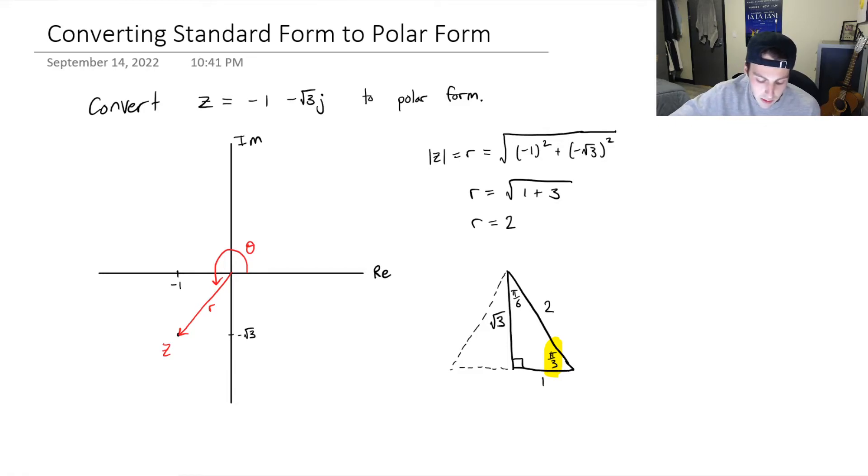We know that we are in the bottom left quadrant, so we actually need to do π plus π over 3. I'll label it in blue. This angle is π over 3, and this angle right here is π. So it's just π plus π over 3. You should be able to figure this out. That's 4π over 3.